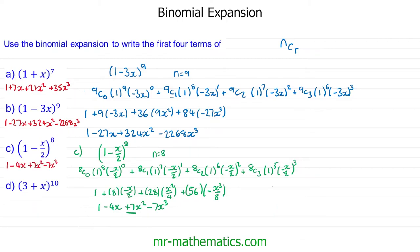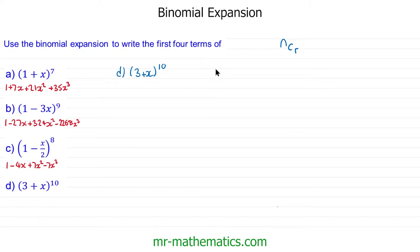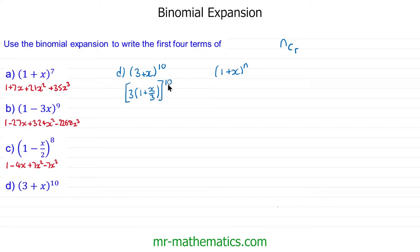Moving on to question d. To use the binomial expansion we need it in the form (1 + x)^n. We have a 3 here, so we'll factor it out: 3 multiplied by (1 + x/3), all raised to the power of 10. Now we expand the 3 with the power of 10: 3 to the 10, multiplied by (1 + x/3) to the 10. Now we can apply the binomial expansion to this.